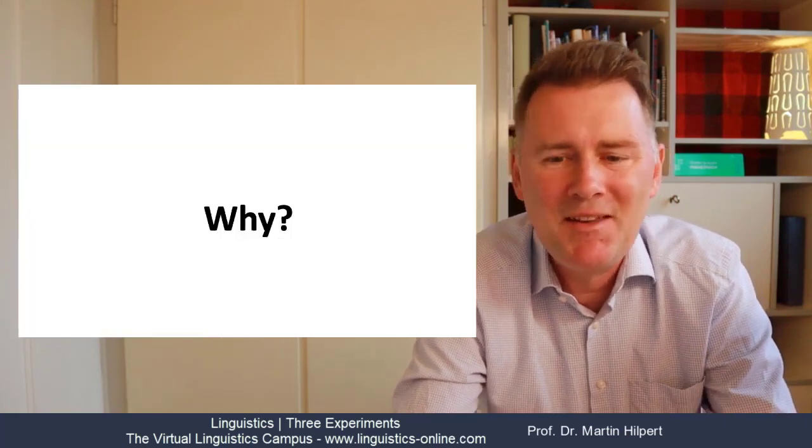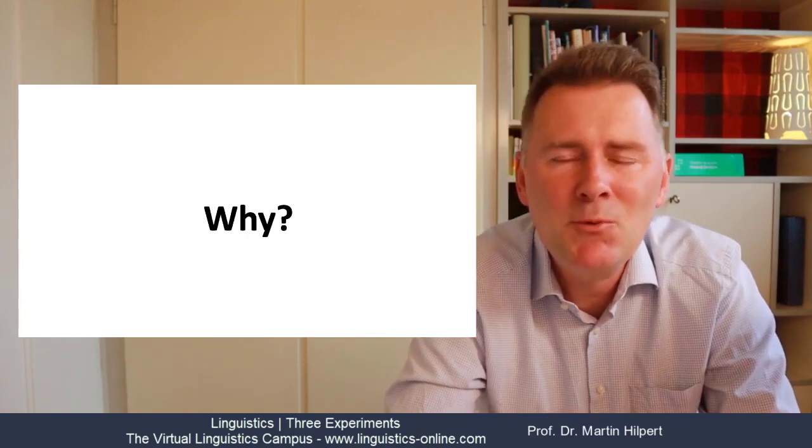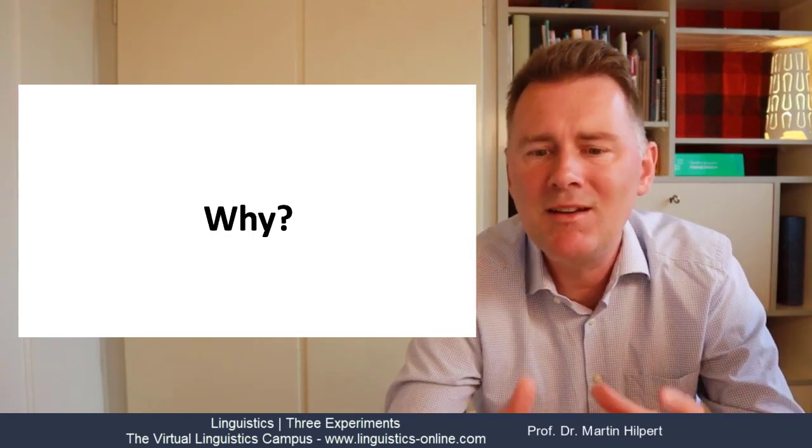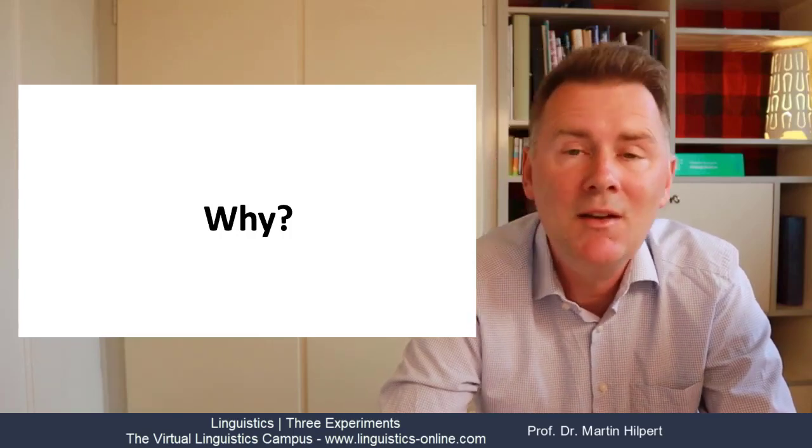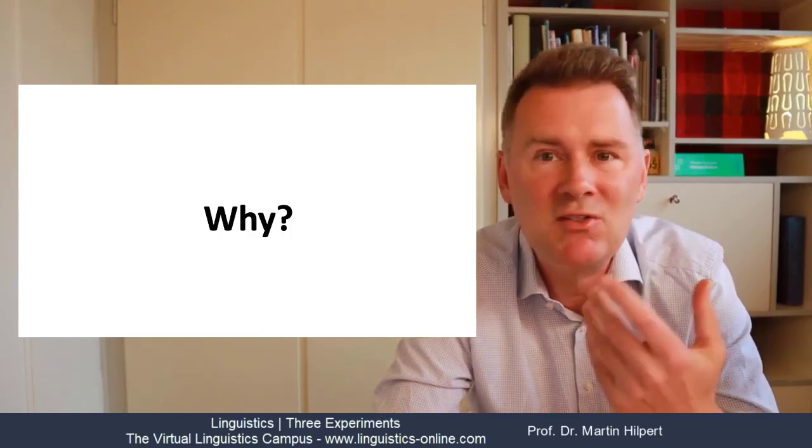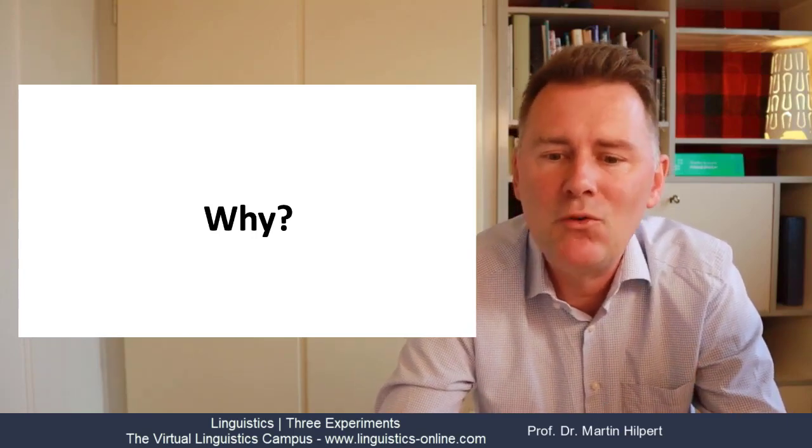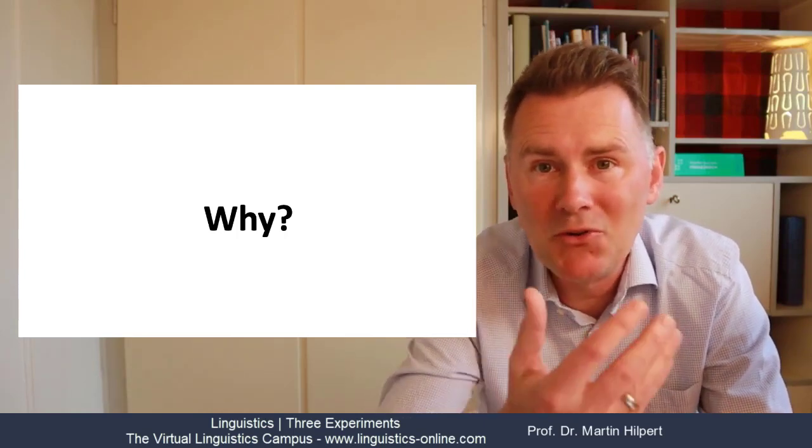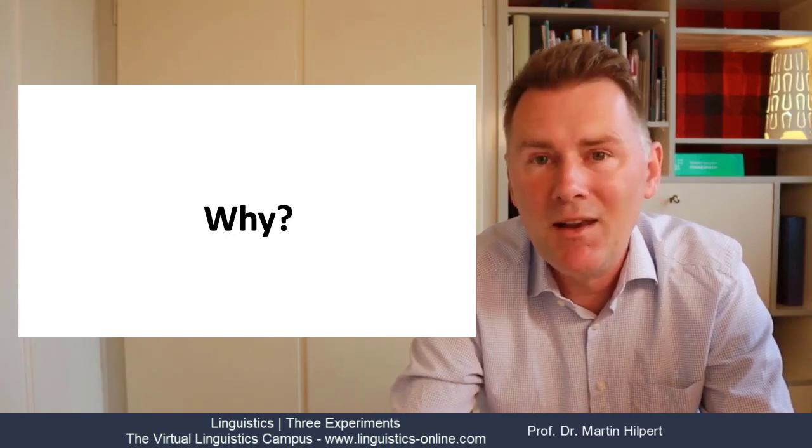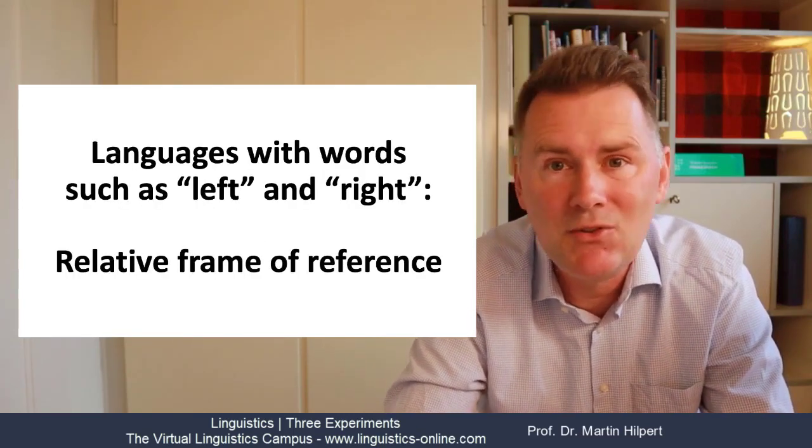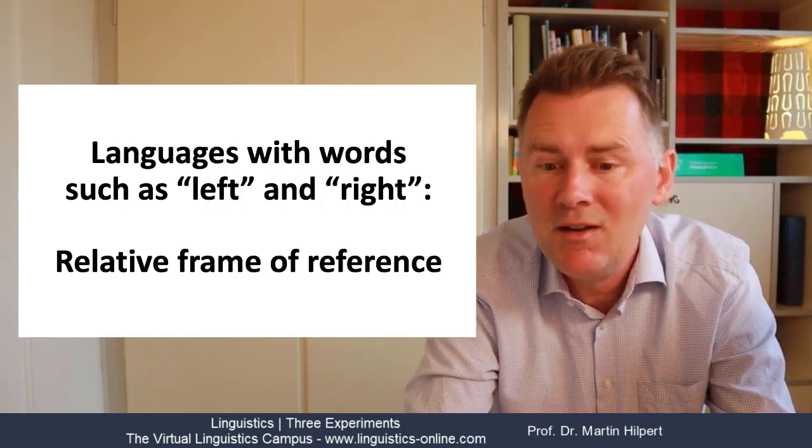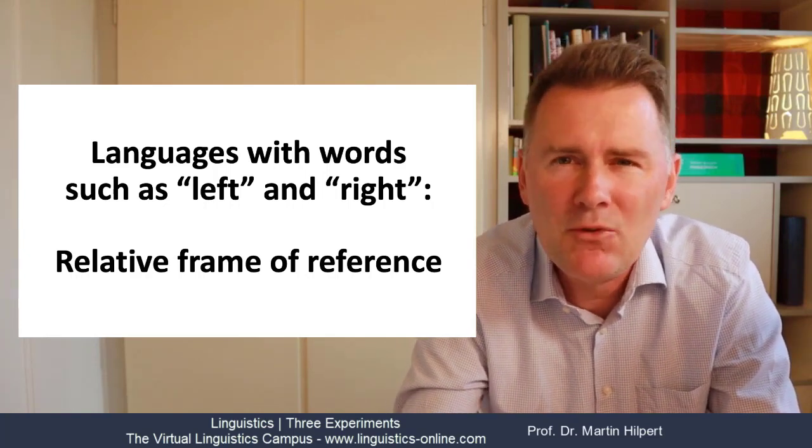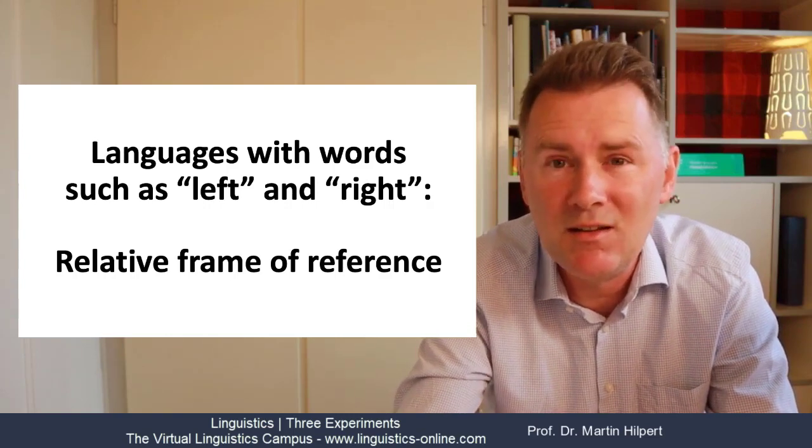Now why is there this difference? The explanation has to do with the fact that languages such as Zeltal and Longu have a way of expressing spatial relations in a way that differs a lot from the way Dutch and Japanese do it. Dutch, Japanese and also French, Spanish, English and German have words for left and right that are relative to the speaker. So what's left to me is actually on your right if we're opposite one another. Languages with words such as left and right are said to use the relative frame of reference.